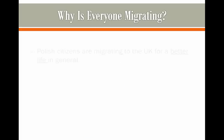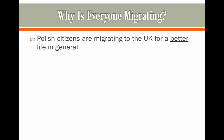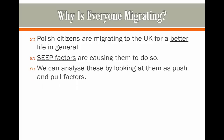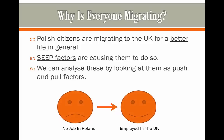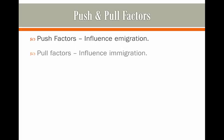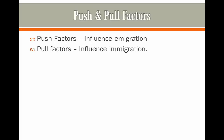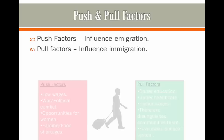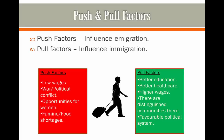So why is everyone migrating? Polish citizens are migrating to the UK for a better life. Seep factors are what are causing them to do this. We can analyse these seep factors by sorting them into push and pull factors. For example, people move towards the UK and become happy because they now have a job, whereas in Poland they may not have had a job. Push factors influence emigration and pull factors influence immigration, as we looked at in our last video on migration. Here are the ones specific to Poland and the UK.